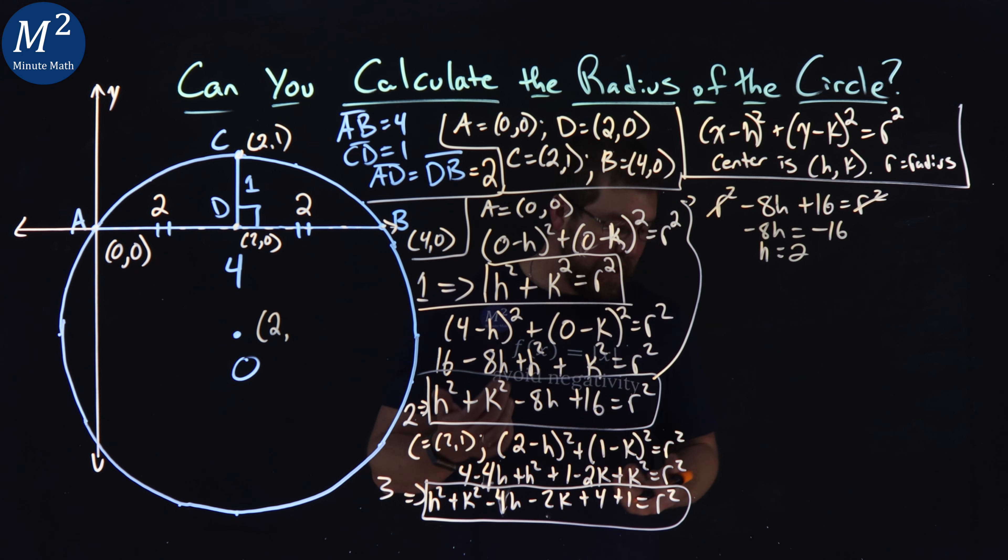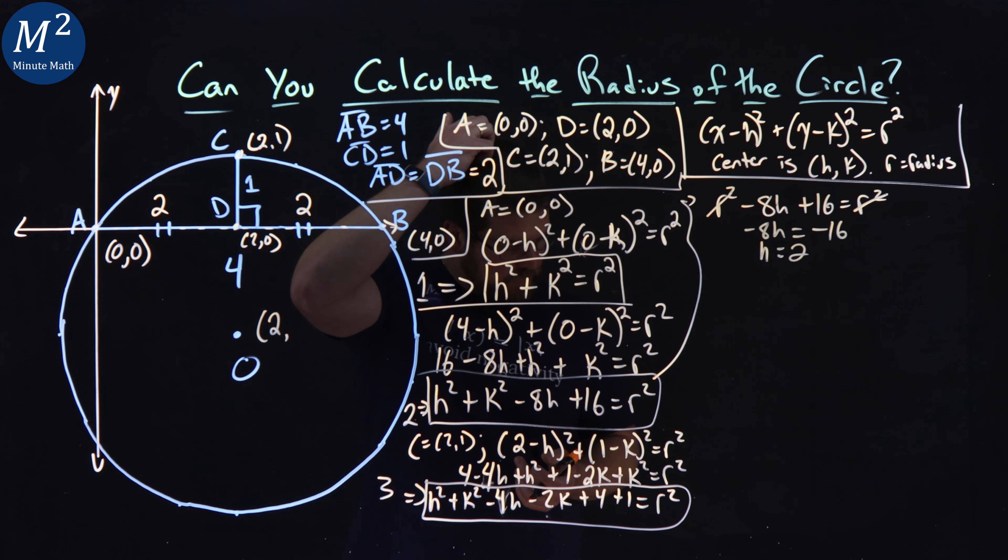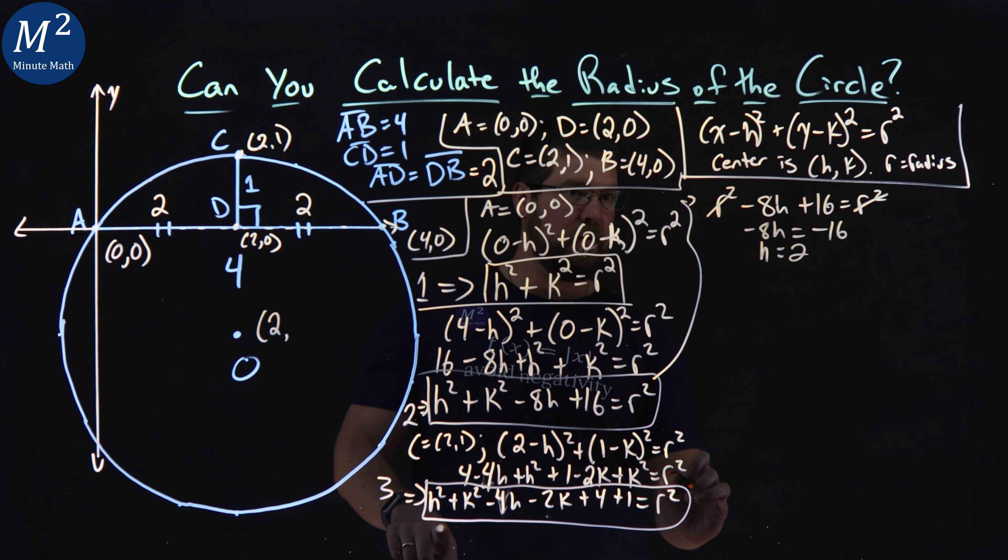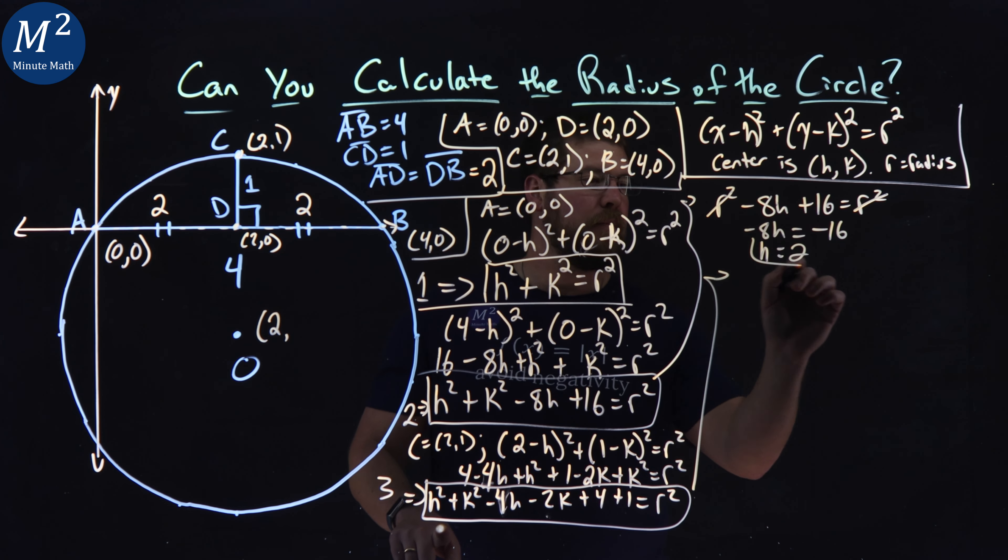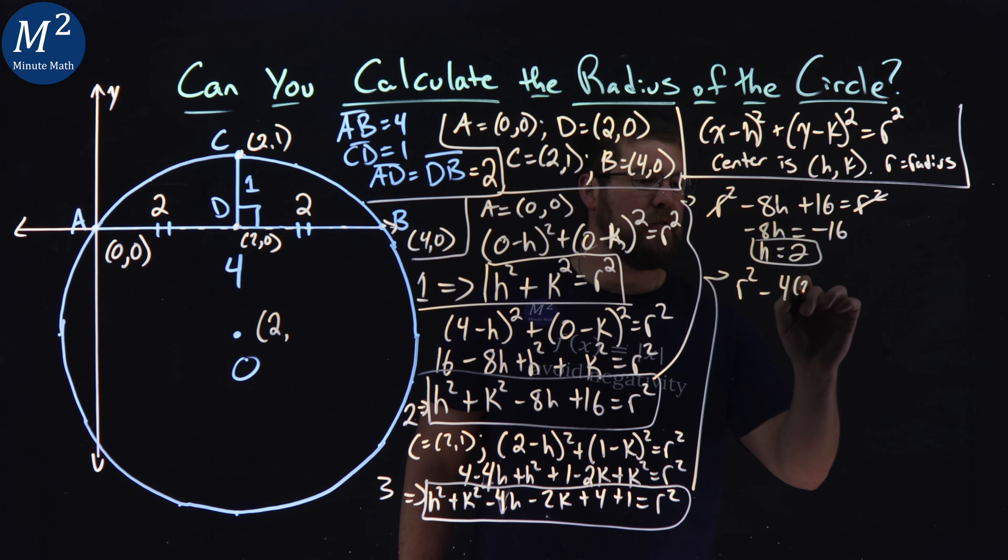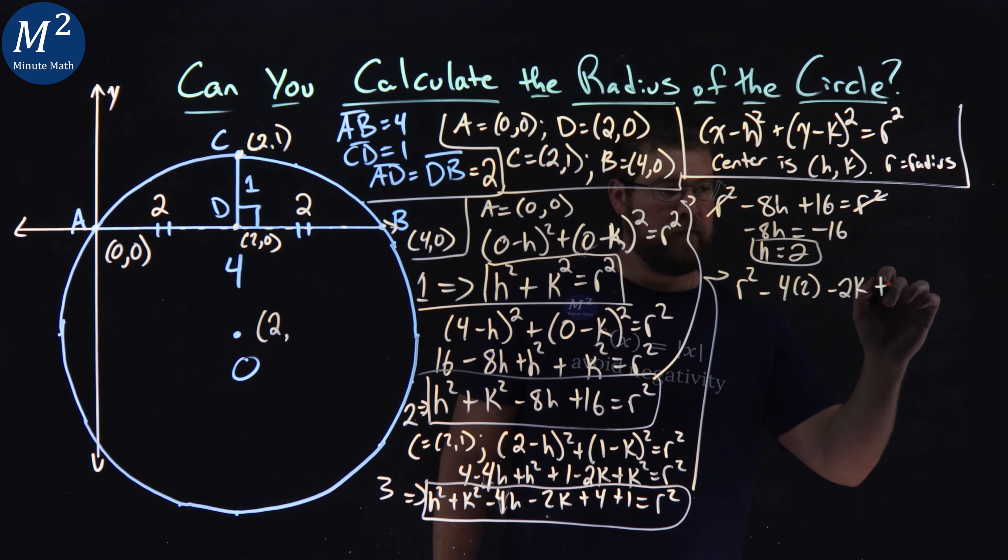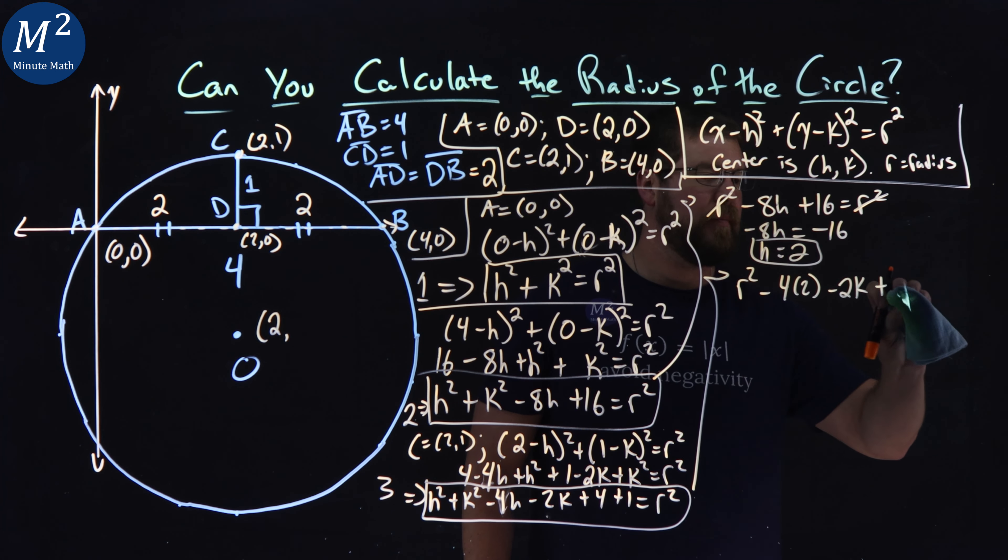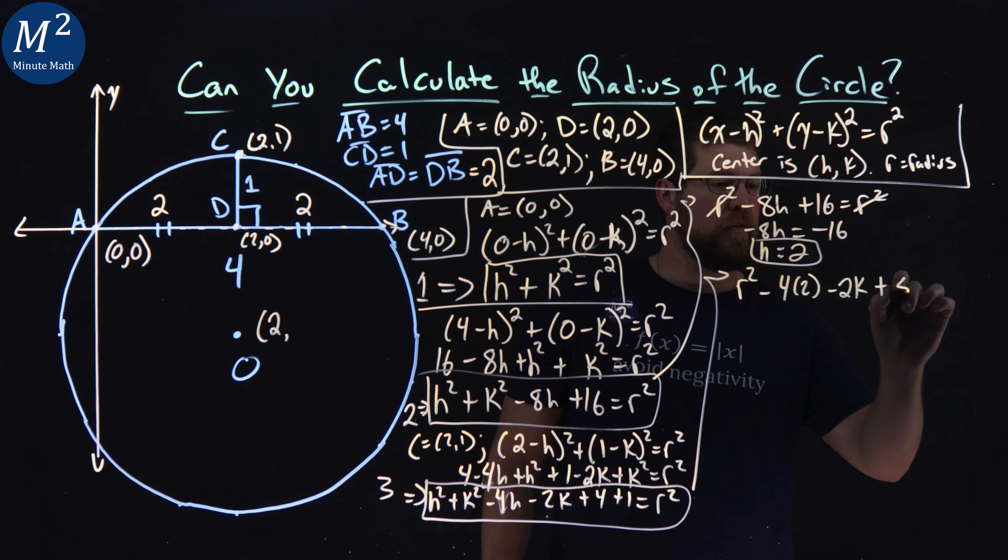Now, what about the K value? So this is where we're going to use the third and first equation plug in what we know also with H. So same idea, third equation right here. Third equation, but H plus K, we know is equal to R squared. So we have R squared minus, and H is 2, four times 2 minus 2K plus 4 plus 1, which is 5. And put that here. I'm going to simplify that out. Equals R squared.